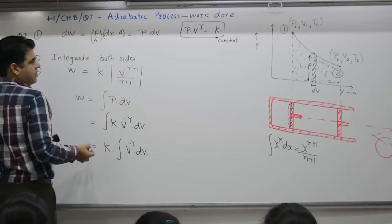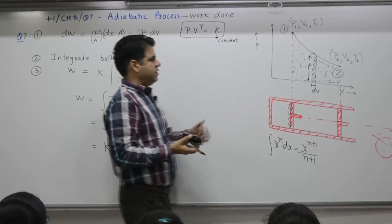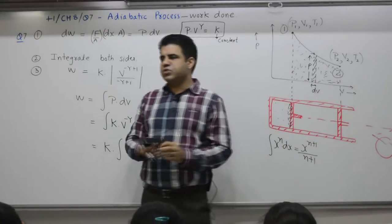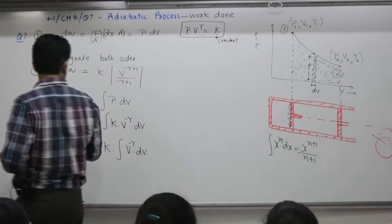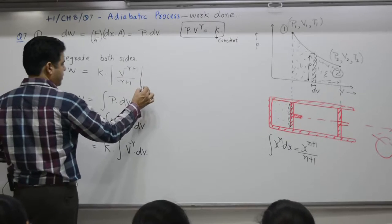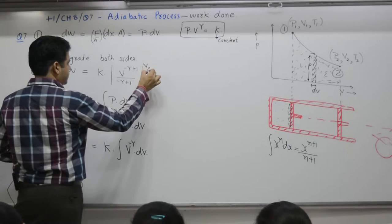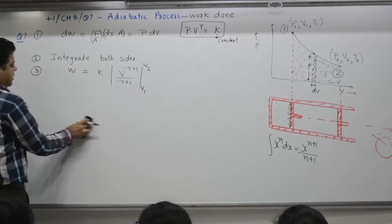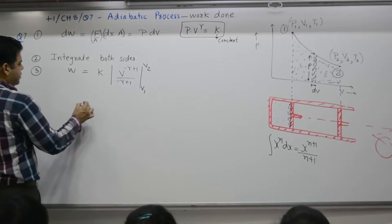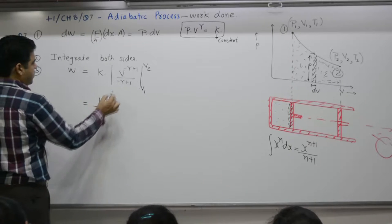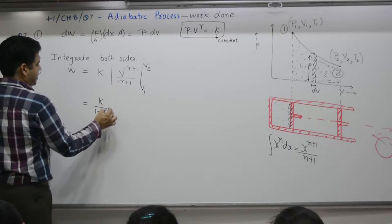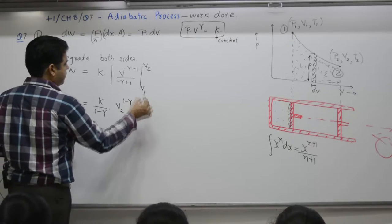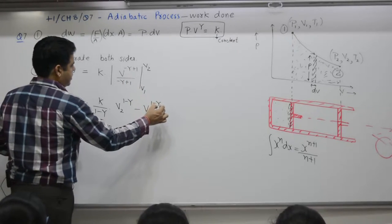Work equals K times V^(-γ+1) over (-γ+1). Limits: expansion. Initial volume is V1. As this expands, the piston moves to new position V2. So work done equals K over (1-γ) times [V2^(1-γ) minus V1^(1-γ)].